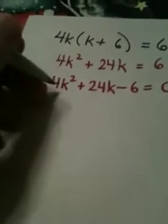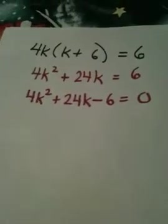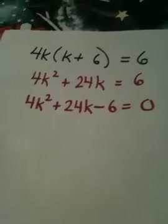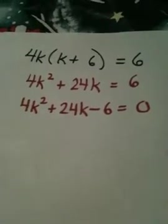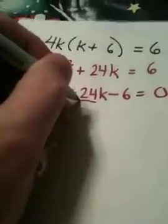4k squared plus 24k minus 6 is equal to 0. Now, I'm going to show you a trick. It's not really a trick, it's more of a technique. See how every one of these numbers is divisible by 2? I prefer to keep numbers as simple as possible. It makes factoring easier, it makes the quadratic formula easier. Let's divide everything by 2.